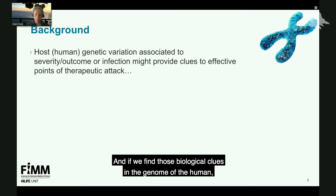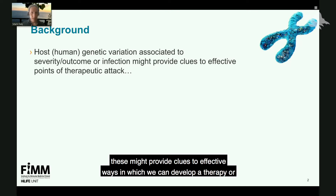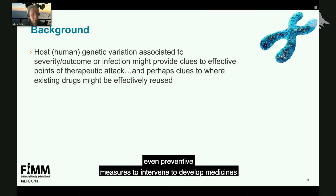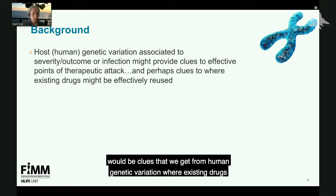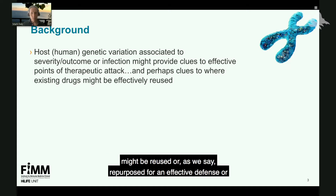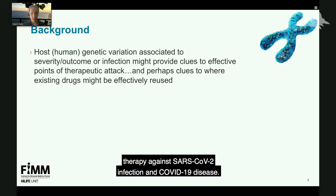And if we find those biological clues in the genome of the human, these might provide clues to effective ways in which we can develop a therapy or even preventive measures to develop medicines and vaccines against SARS-CoV-2 infection. Especially of interest would be clues from human genetic variation where existing drugs might be reused, or repurposed, for an effective defense or therapy against SARS-CoV-2 infection and COVID-19 disease.